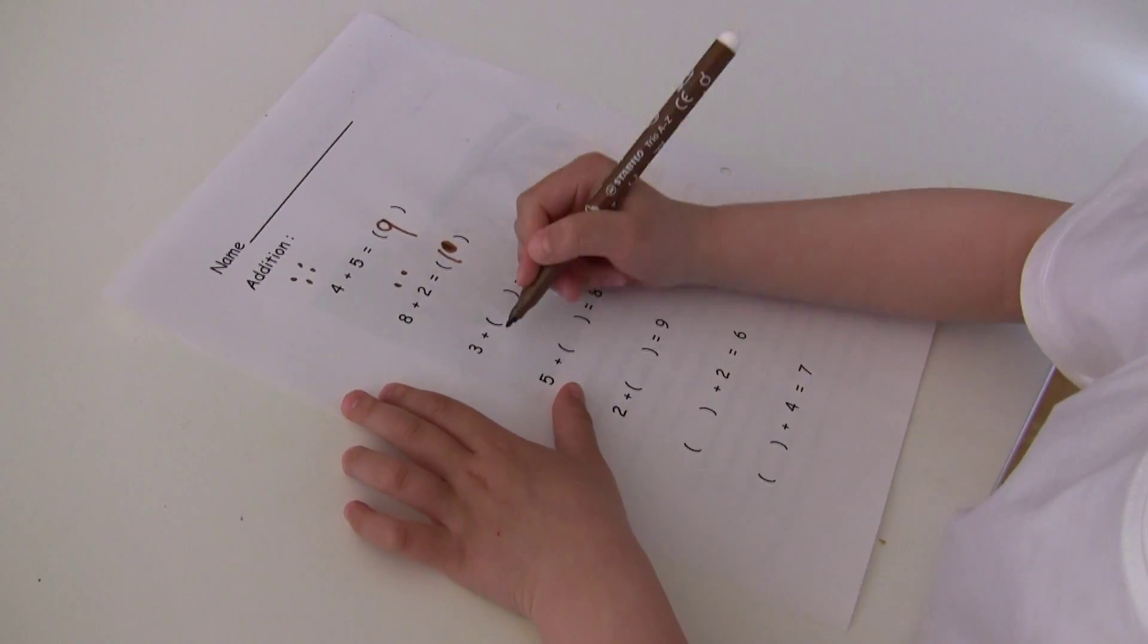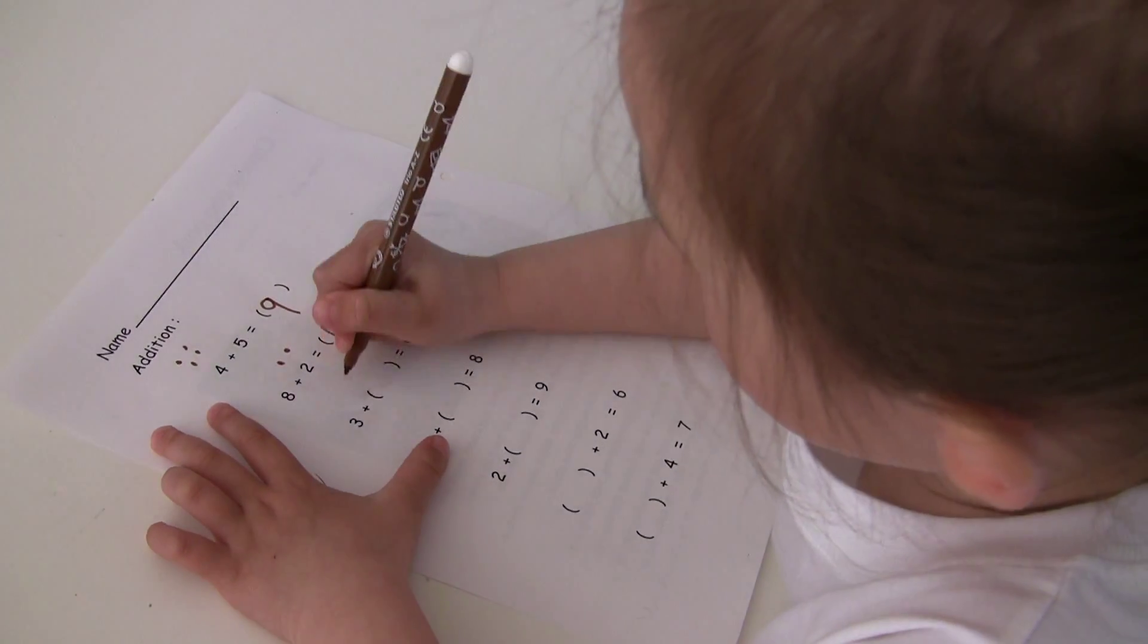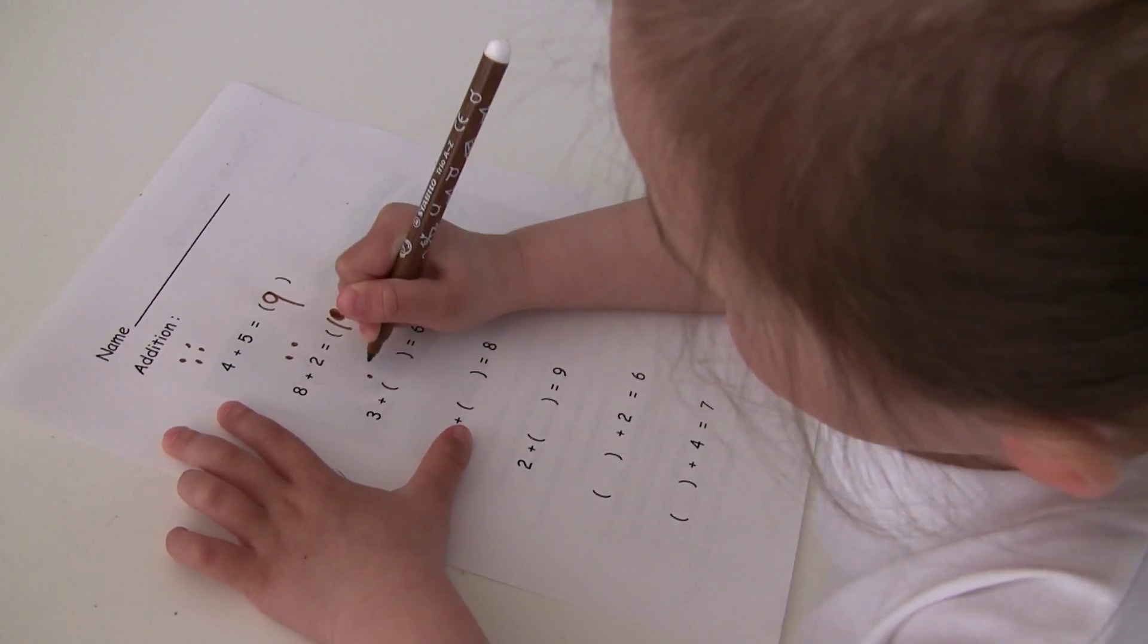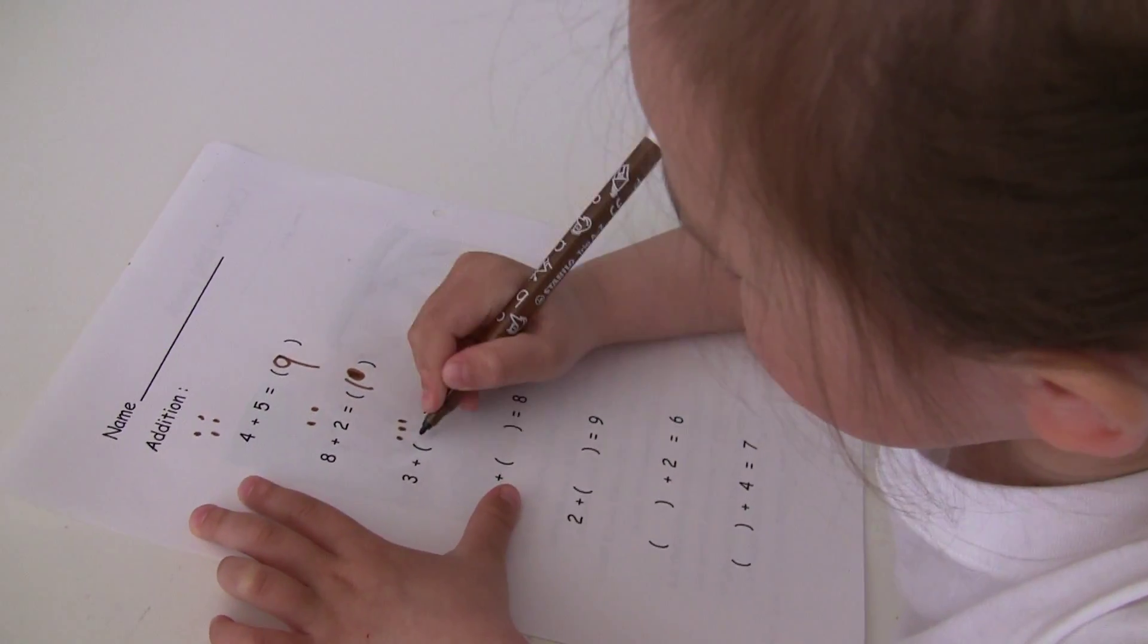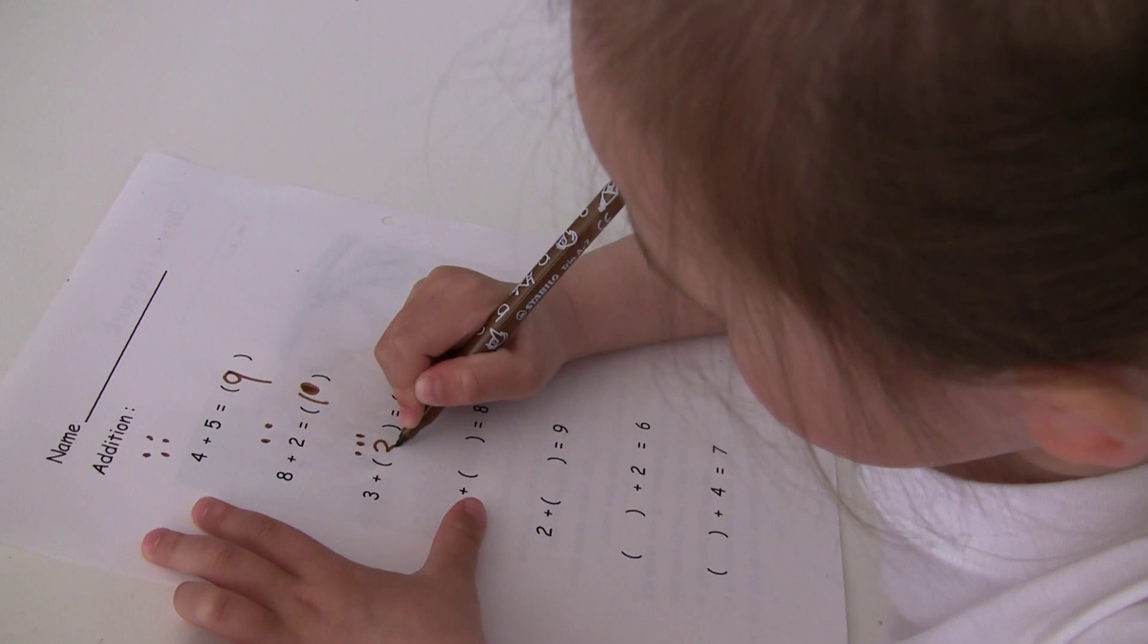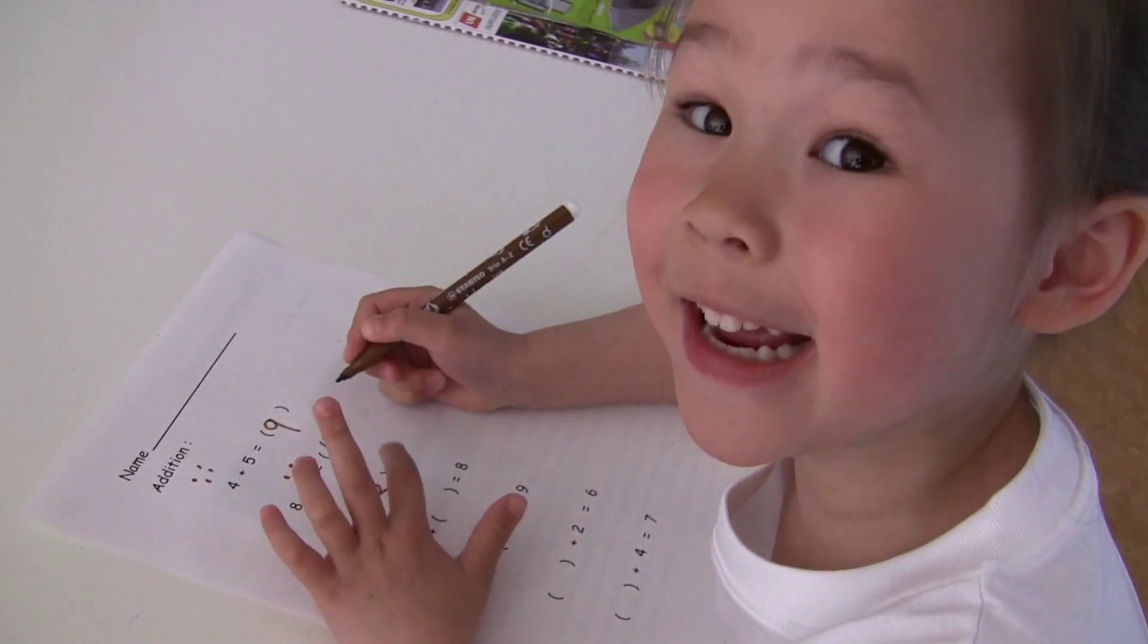3 plus how many equals to 6. 3, 4, 5, 6. So 1, 2, 3. No need to dot. It's almost 6. Okay.